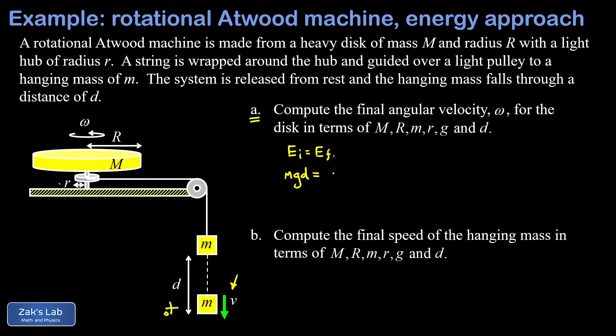In the final state I don't have any gravitational potential energy because my hanging mass is now at the zero of the y coordinate, but I do have two kinetic energy terms. The first of those is one half I omega squared for the disk, and the second is one half mv squared for the hanging mass.